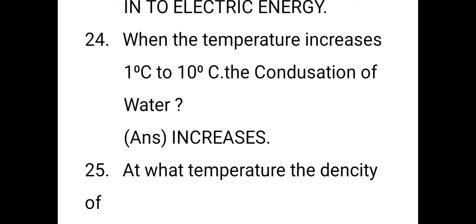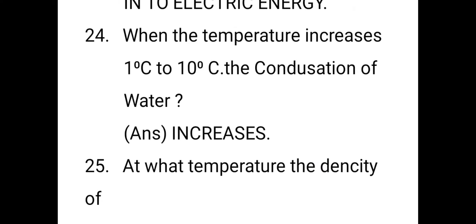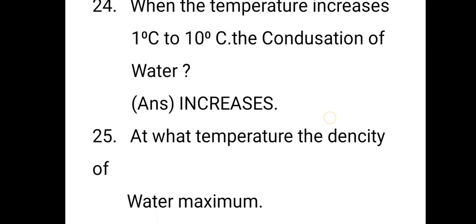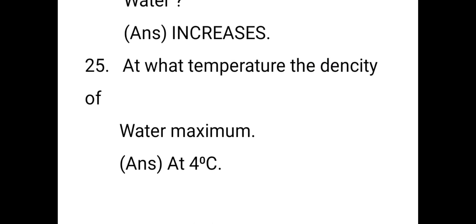Next question: when the temperature increases from one degree to 10 degrees centigrade, the density of water increases. This is because of the anomalous behavior of water — at four degrees centigrade, unlike other substances that expand when heated, water actually decreases in volume up to four degrees and then increases. That is the anomalous behavior of water. The density of water is maximum at four degrees centigrade.